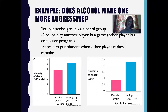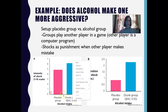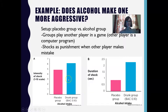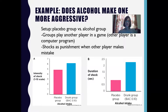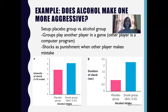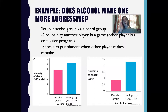We've got our placebo group and our alcohol group — this is our independent variable, the one thing we varied. The groups were told they were playing a computer game with another player in a different room, but the other player was actually a computer program. Whenever the other player made a mistake, the participant would deliver a shock. Researchers measured the intensity of the shock on a 1 to 10 scale and the duration. Compared to the placebo group, the alcohol group delivered shocks of higher intensity and longer duration, indicating that alcohol did make one more aggressive. This is a single factor experiment — we only have one independent variable: whether or not you got alcohol.